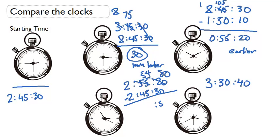80 minus 30 is 50. 54 minus 45 is 9. And these are gone. So, this is 9 minutes and 50 seconds later.